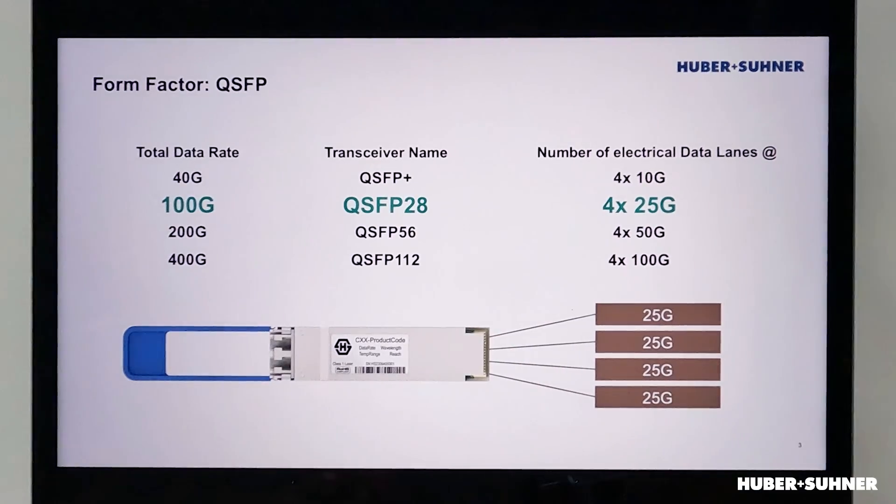Let's talk about 100 gig as an example. Back when 100 gig transceivers were developed, it technically wasn't possible to have a higher data rate than 25 gig per electrical lane. And that's why the trick was to just increase the number of electrical lanes — increase to 4. And that's also where the name came from: QSFP, as in quad SFP, quad meaning 4 times electrical lanes.